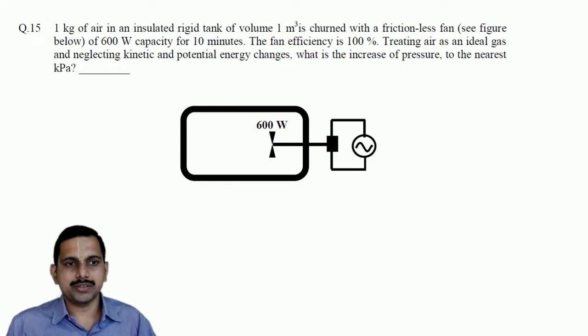The question is: 1 kg of air in an insulated rigid tank of volume 1 m³ is churned with a frictionless fan of 600 W capacity for 10 minutes. The fan efficiency is 100%. Treating air as an ideal gas and neglecting kinetic and potential energy changes, what is the increase of pressure to the nearest kPa?